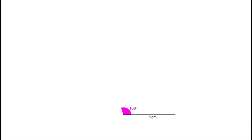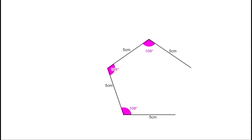First, draw a line of length 5 cm. Now take 108 degrees at one end and draw a line of length 5 cm. We know each angle of a regular pentagon is 108 degrees. Again take 108 degrees at the other end and draw a line of length 5 cm. Repeat this process to complete the regular pentagon of side 5 cm.